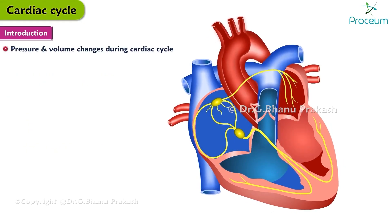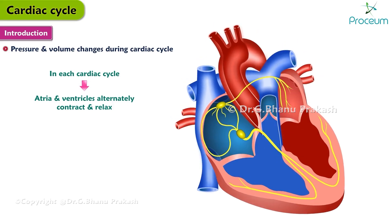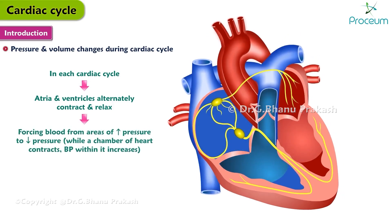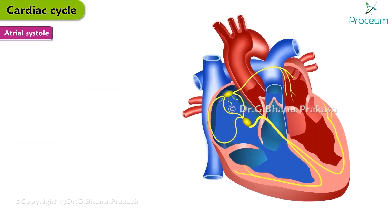Pressure and volume changes during the cardiac cycle. In each cardiac cycle, the atria and ventricles alternately contract and relax, forcing blood from areas of higher pressure to areas of lower pressure. While a chamber of the heart contracts, blood pressure within it increases.